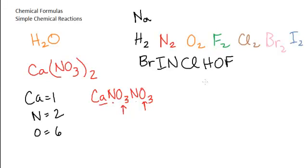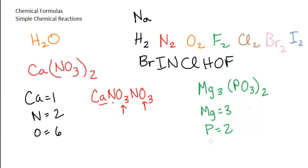If we can do another one that's maybe a little more complicated, if we see something like this. We have three magnesiums. We have two phosphoruses. And again, with our oxygens, we do see six here.